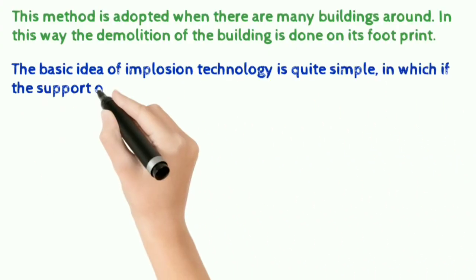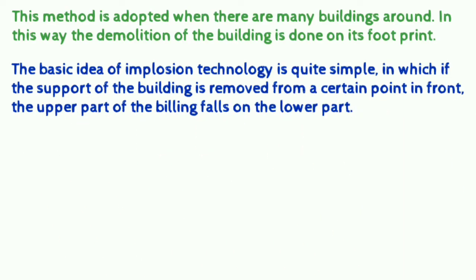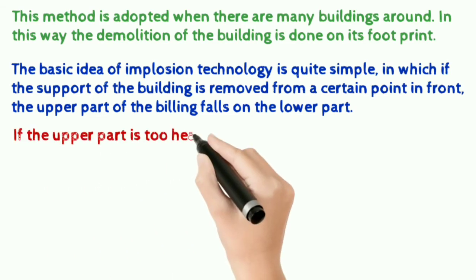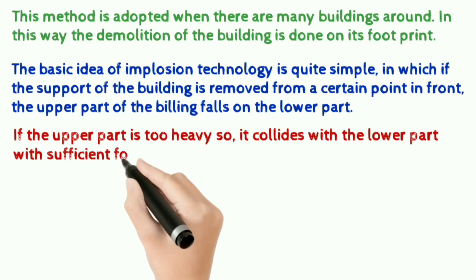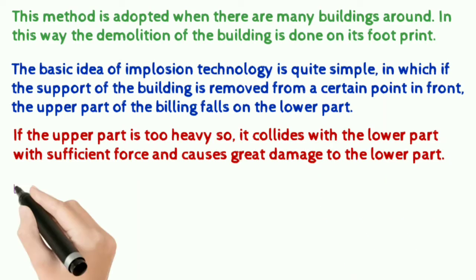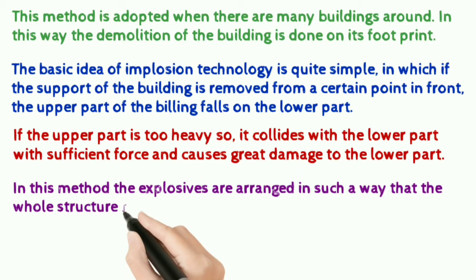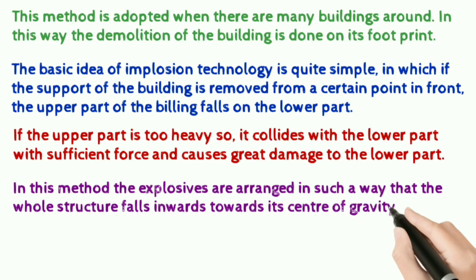The basic idea of implosion technology is quite simple: if the support of the building is removed from a certain point in front, the upper part of the building falls on the lower part. If the upper part is too heavy, it collides with the lower part with sufficient force and causes great damage to the lower part. In this method, the explosives are arranged in such a way that the whole structure falls inwards towards its center of gravity.